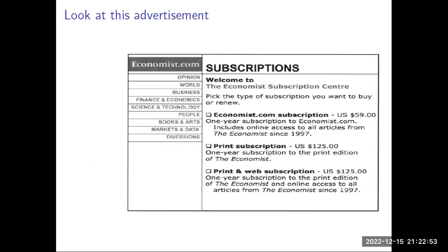Look at this advertisement. This is an advertisement by Economist.com advertising their subscriptions. The first option is the Economist.com subscription - a one-year subscription to Economist.com includes online access to all articles from the Economist since 1997. If you get this online access, you will have to pay around $59.